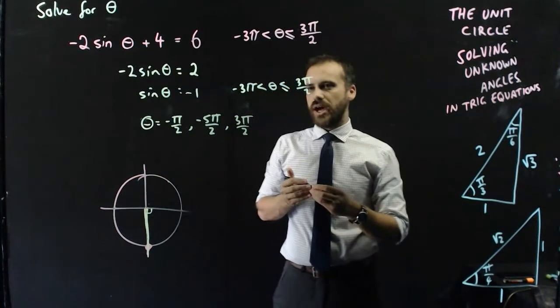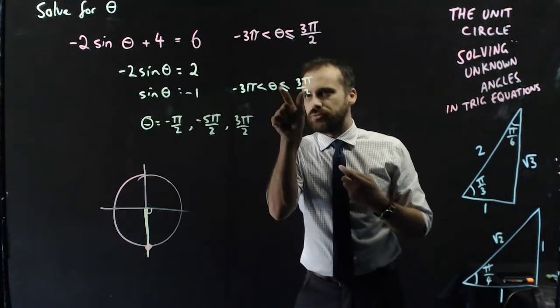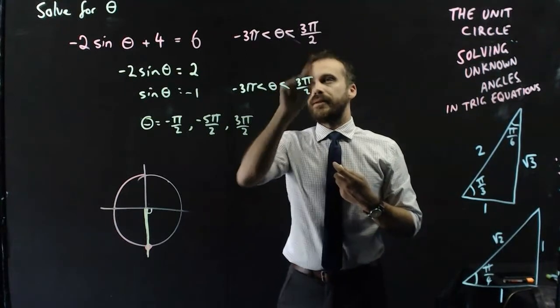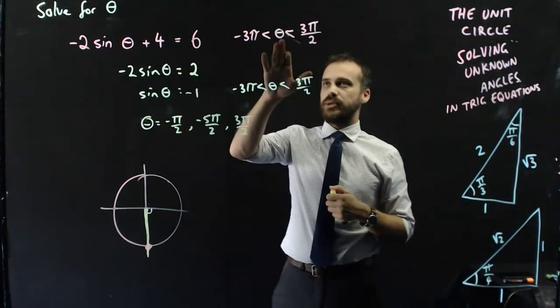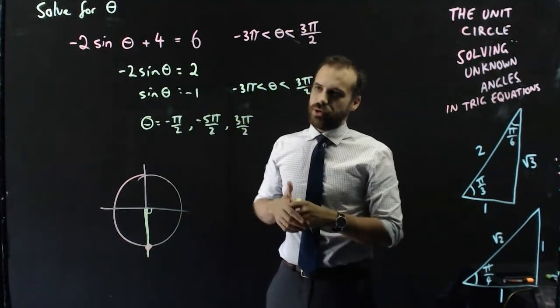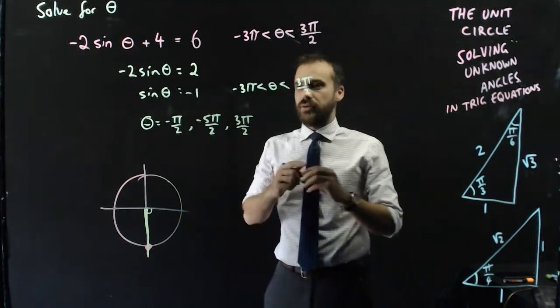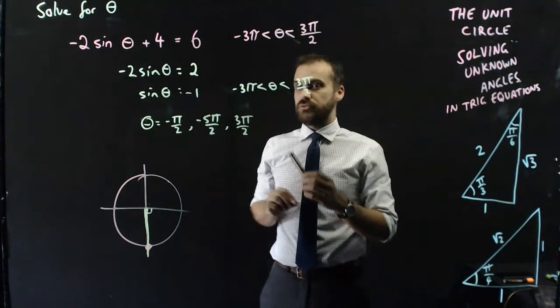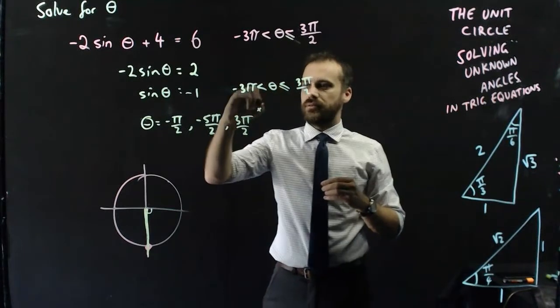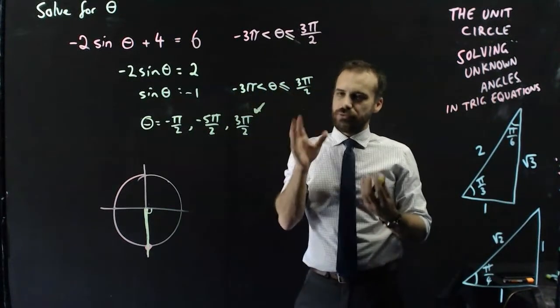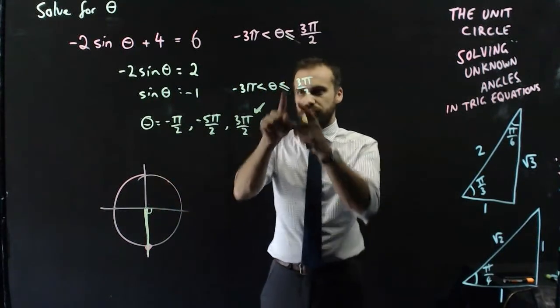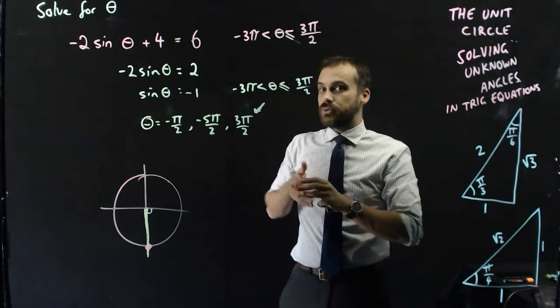But if I had have done something sneaky and just rubbed this bit out, well, now that says that we're moving between theta and less than 3π on 2. So my answer can't be 3π on 2 because it's less than. So at the moment, my answer's wrong. But if I add these back in, my answer is right. So you just need to be really careful when you're looking at those boundaries, particularly when we're looking at boundary angles. Am I looking at a less than or equal to, or am I looking at a less than?